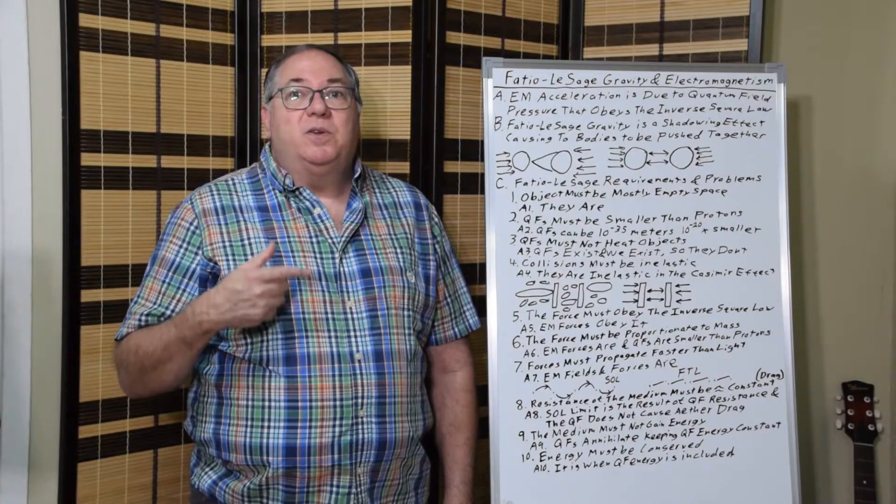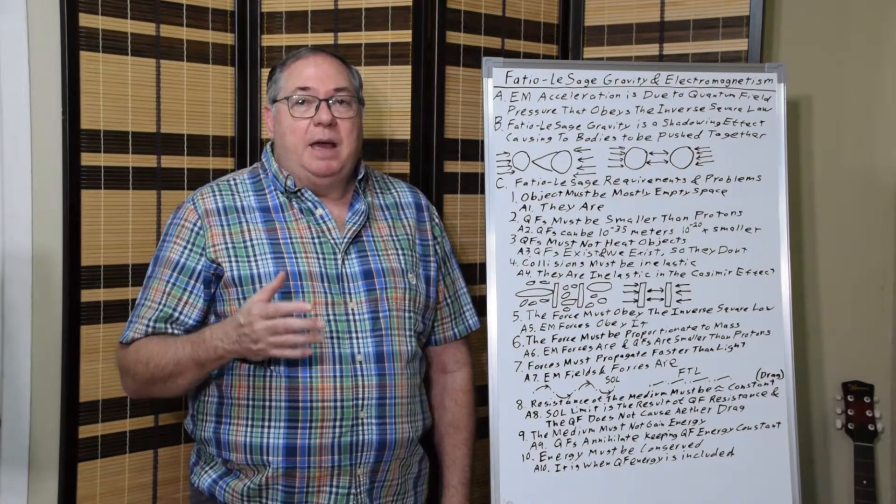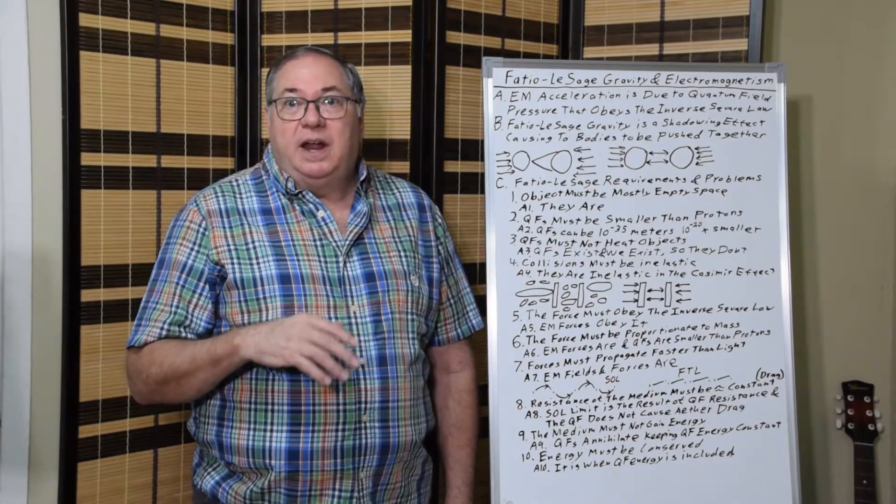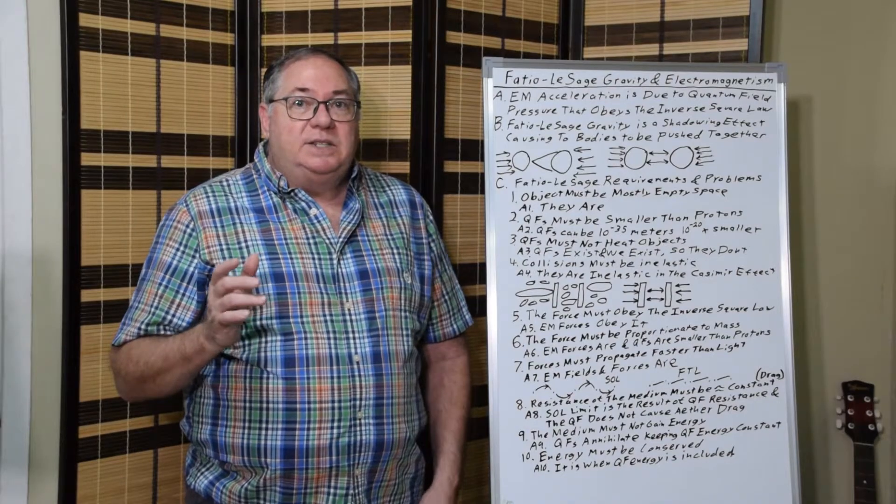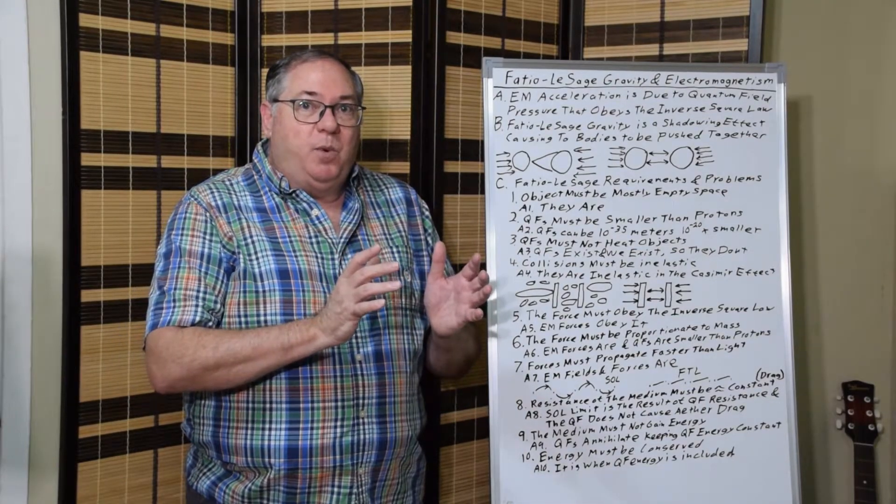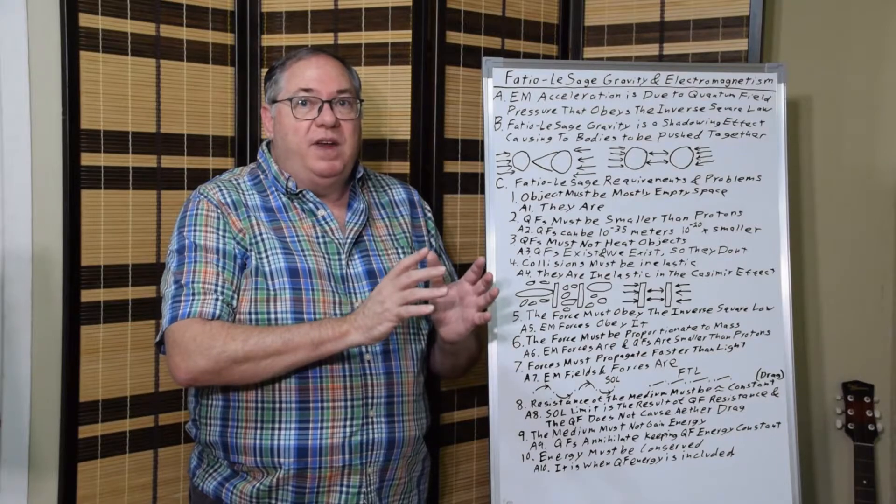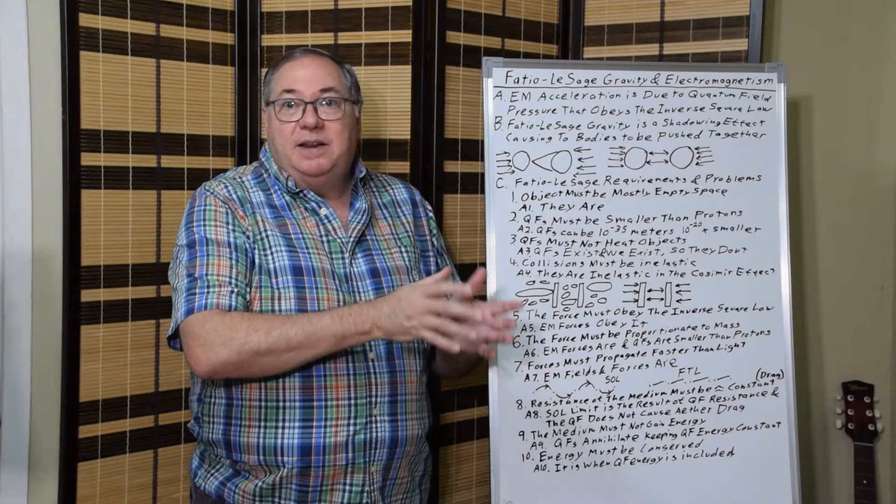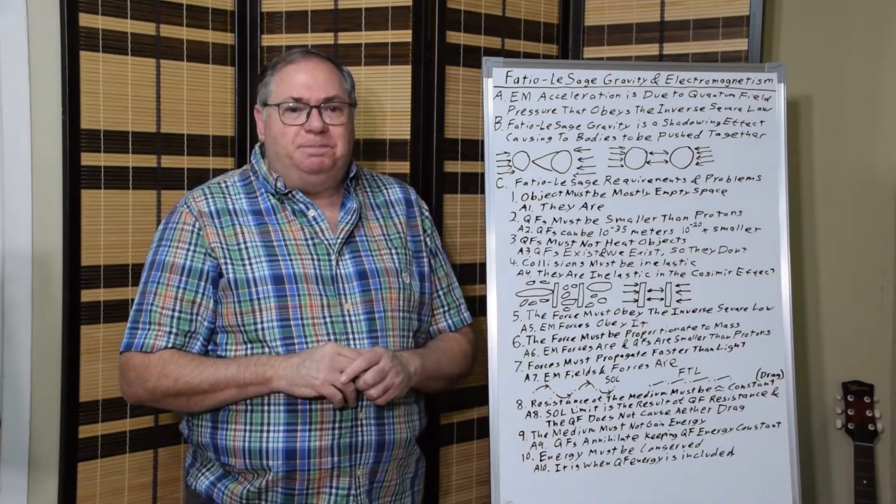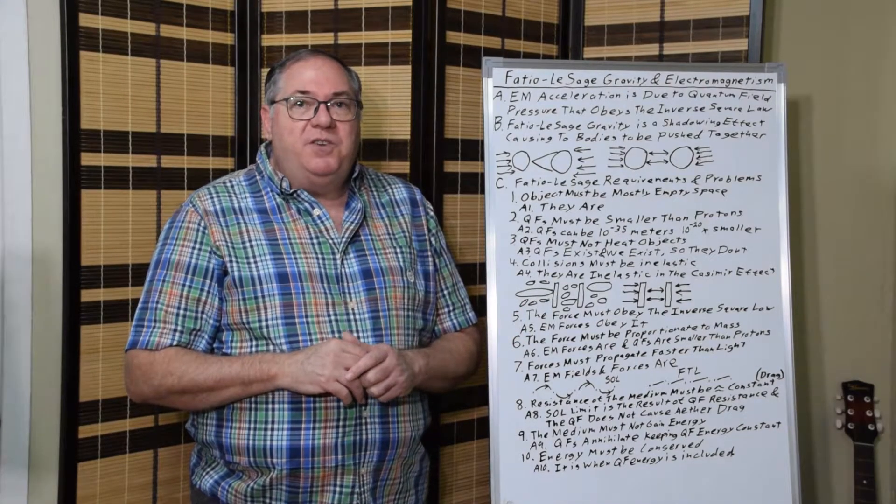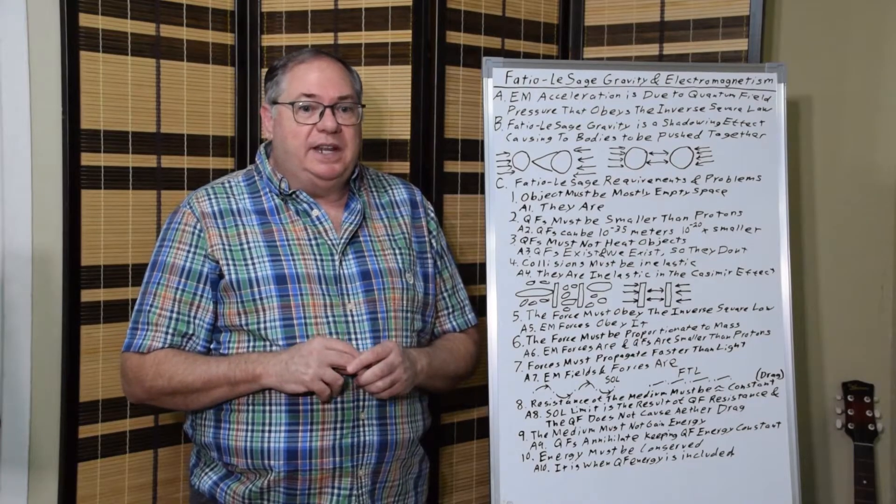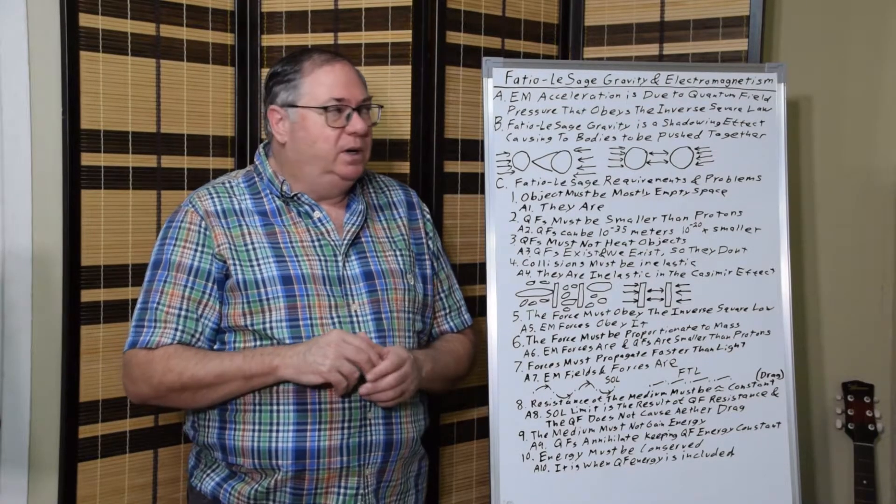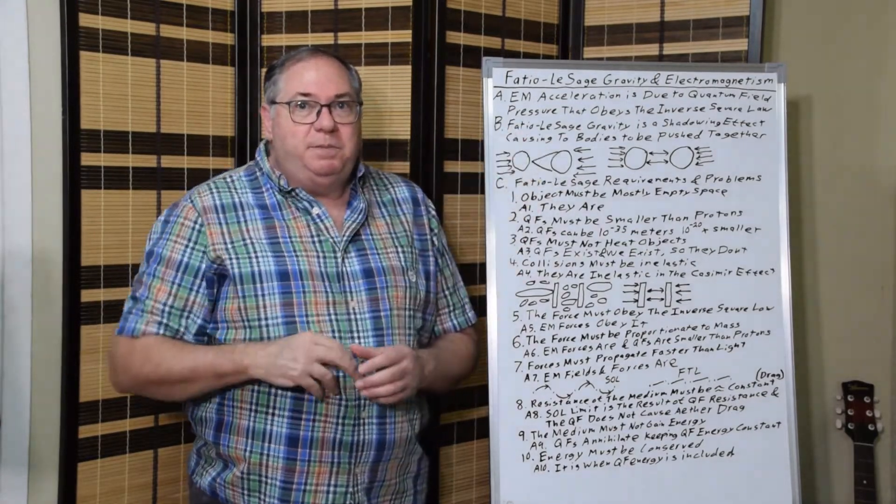We do know there's a dynamical Casimir effect that happens when objects are moving at very high velocities. At some point, there's a point where they're moving so fast that the quantum fluctuations do gain energy, and then they do form photons. But generally, they don't lose energy that way, not for these type of low-speed interactions.